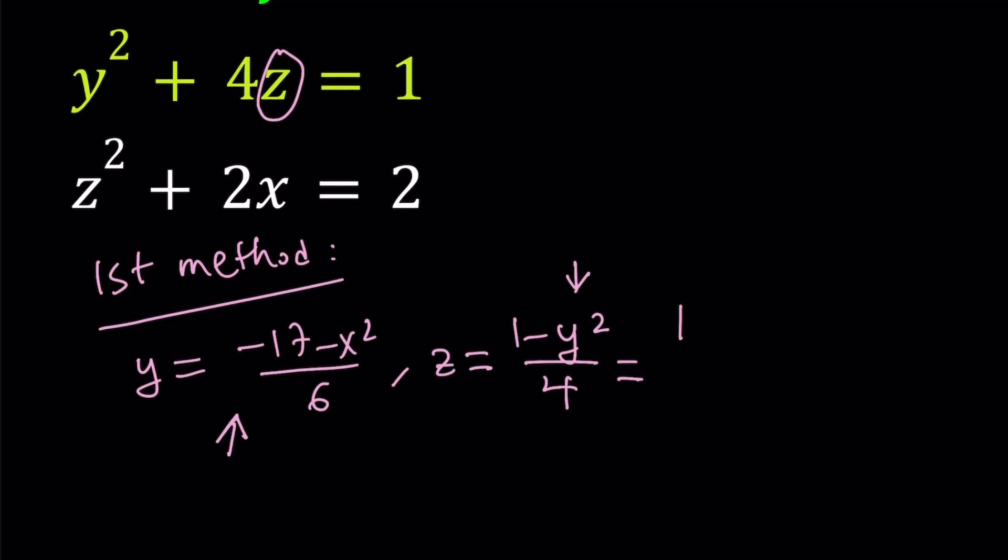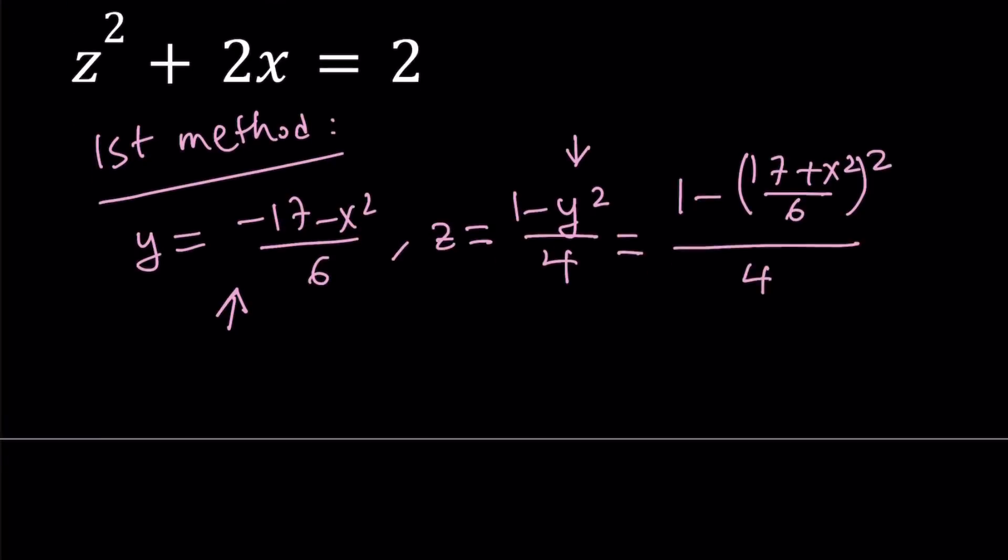But since we're squaring it, we can go ahead and write the opposite of this. Because when you square, it's not going to matter. You could write the same thing as well, but squaring this quantity is actually easier than the other one. So now we got an expression for y in terms of x, and we got an expression for z in terms of x. Now let's go ahead and simplify z.